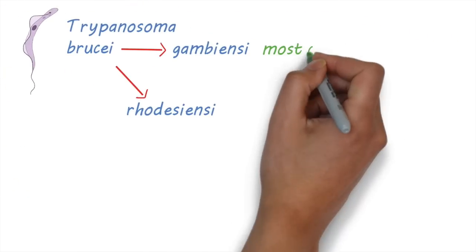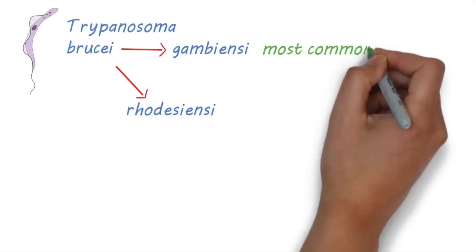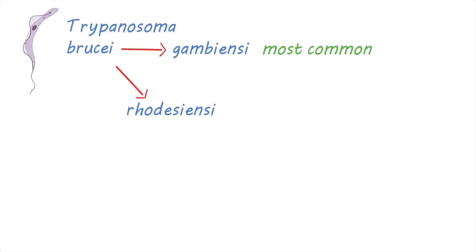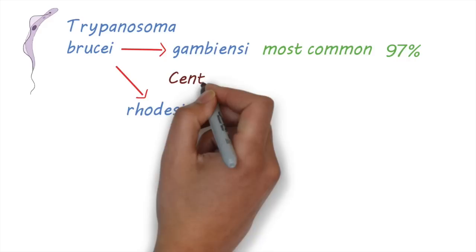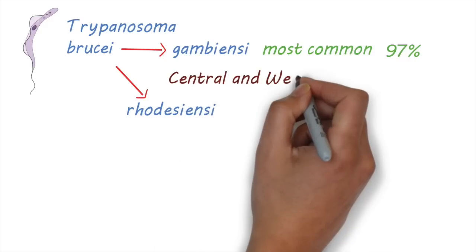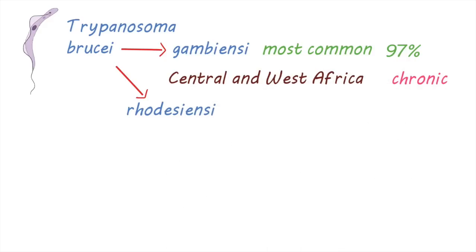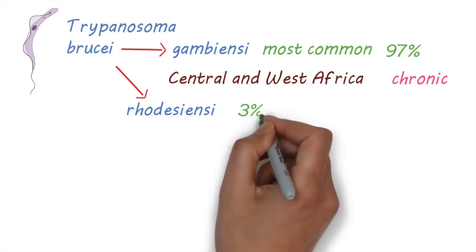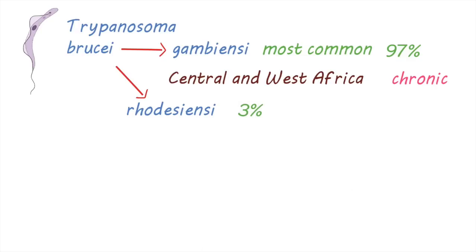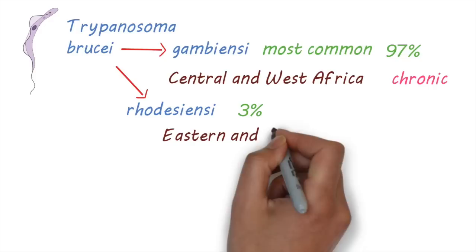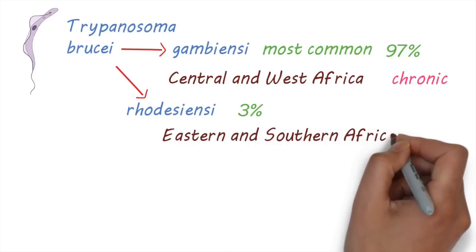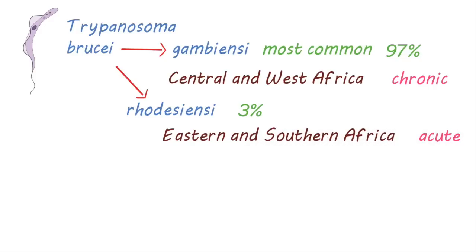Gambiensi is the most common form of African Trypanosomiasis, accounting for about 97% of all cases. It's found in countries in Central and West Africa and tends to cause the chronic form of disease. Rhodesiensi accounts for about 3% of cases. It's found in countries in Eastern and Southern Africa and causes a more acute infection.